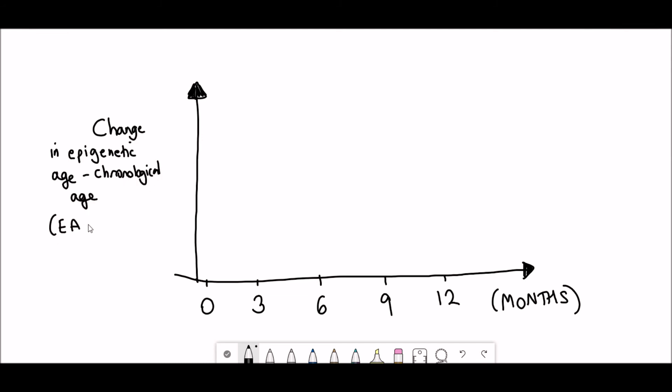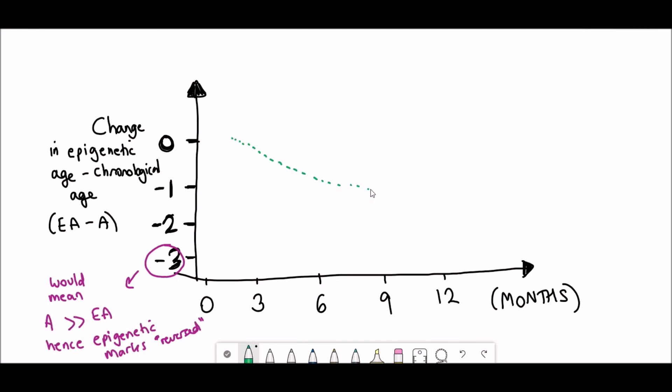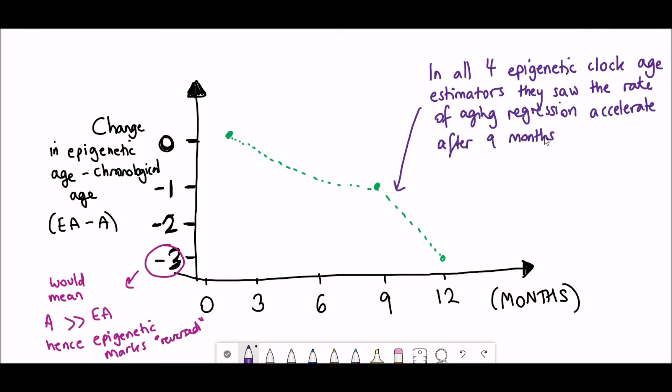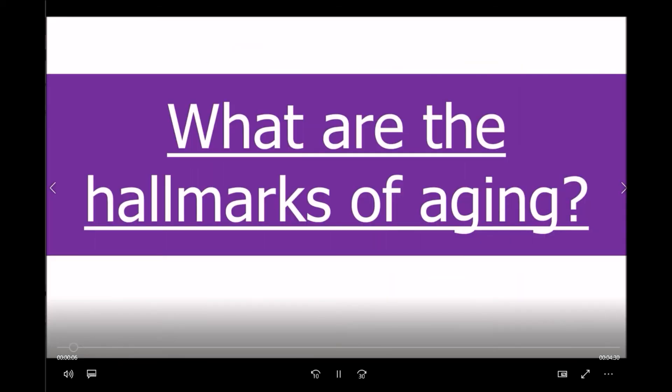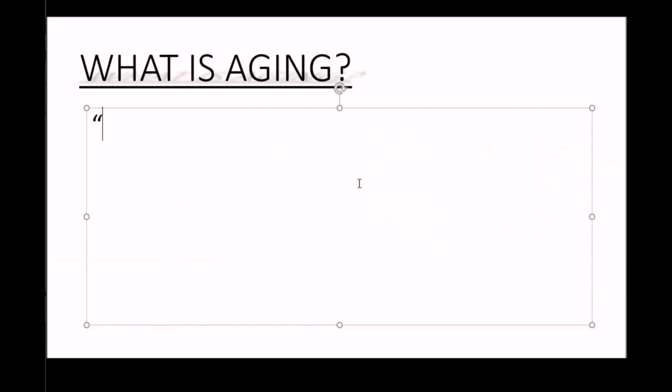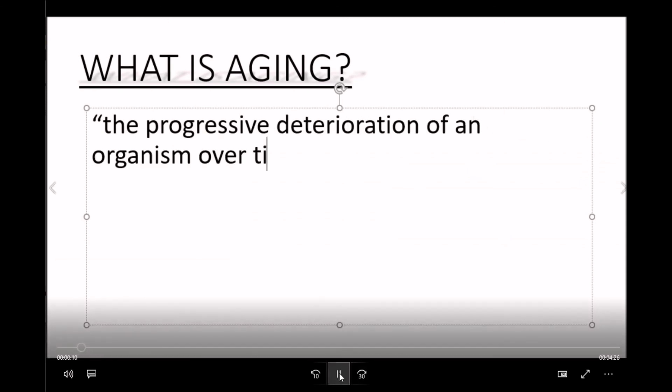So firstly, it's important to notice that they saw that the epigenetic age was lower than the chronological age, hence the negative scale on the axes. Interestingly, what they saw was that in all of the different age estimators that they used, the rate of aging regression accelerated after nine months of treatment. Obviously epigenetic age doesn't include all aspects of aging, but since it's currently our best measure of biological age, it's interesting and exciting to see these kind of results.